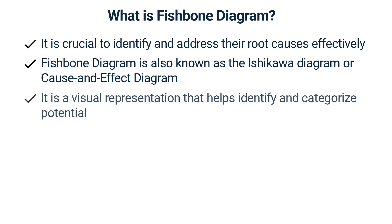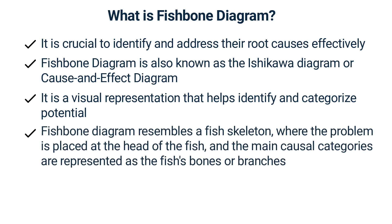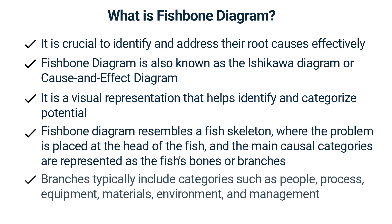The fishbone diagram is a visual representation that helps identify and categorize potential causes contributing to a problem. The diagram resembles a fish skeleton, where the problem is placed at the head of the fish and the main causal categories are represented as the fish's bones or branches. These branches typically include categories such as people, process, equipment, materials, environment, and management. More detailed causes and sub-causes are added to each branch, forming a comprehensive analysis.